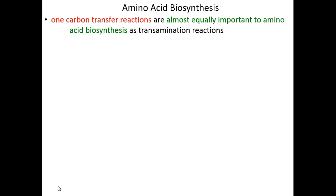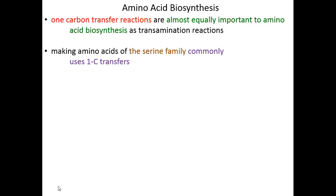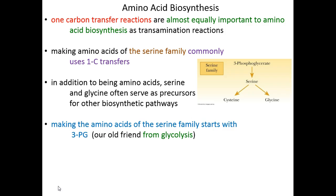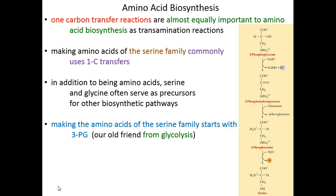These one-carbon transfer reactions are almost equally important to amino acid biosynthesis as transamination reactions. Making amino acids of the serine family commonly needs these one-carbon transfers. The serine family is made up of serine, glycine, and cysteine. In addition to being amino acids, serine and glycine are also precursors for other biosynthetic pathways. Making the amino acids of this family starts with 3-phosphoglycerate — our old friend from the second phase of glycolysis, which becomes 2-phosphoglycerate, then phosphoenolpyruvate, then pyruvate itself.